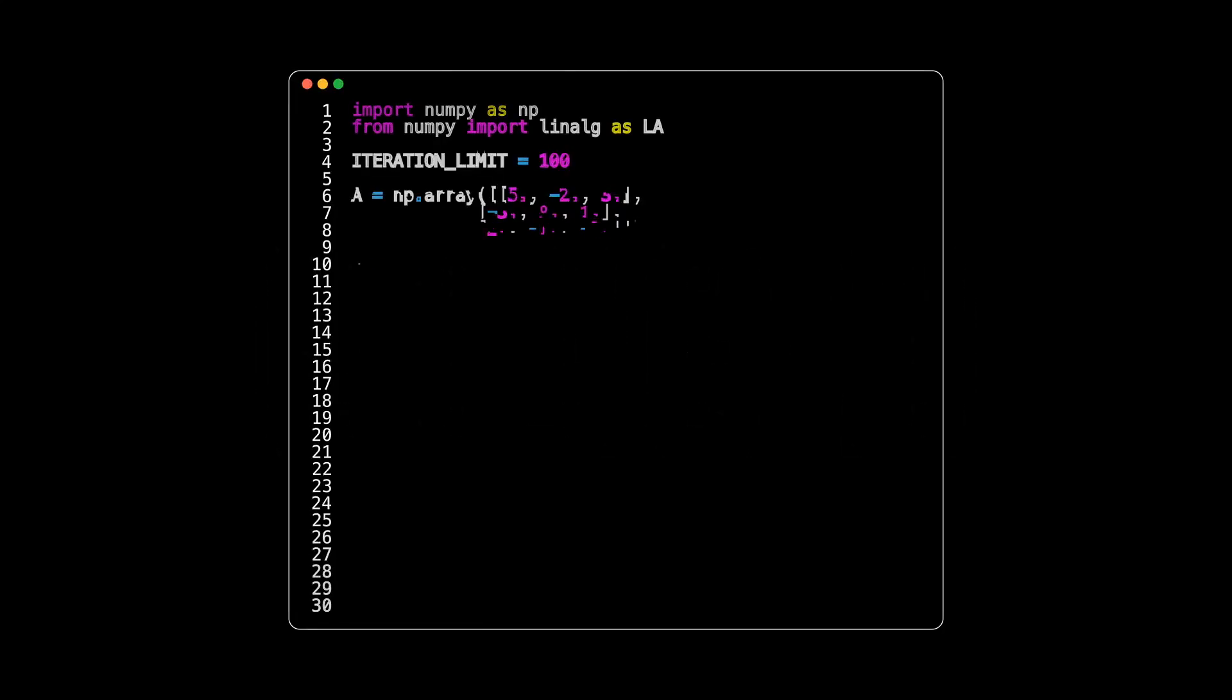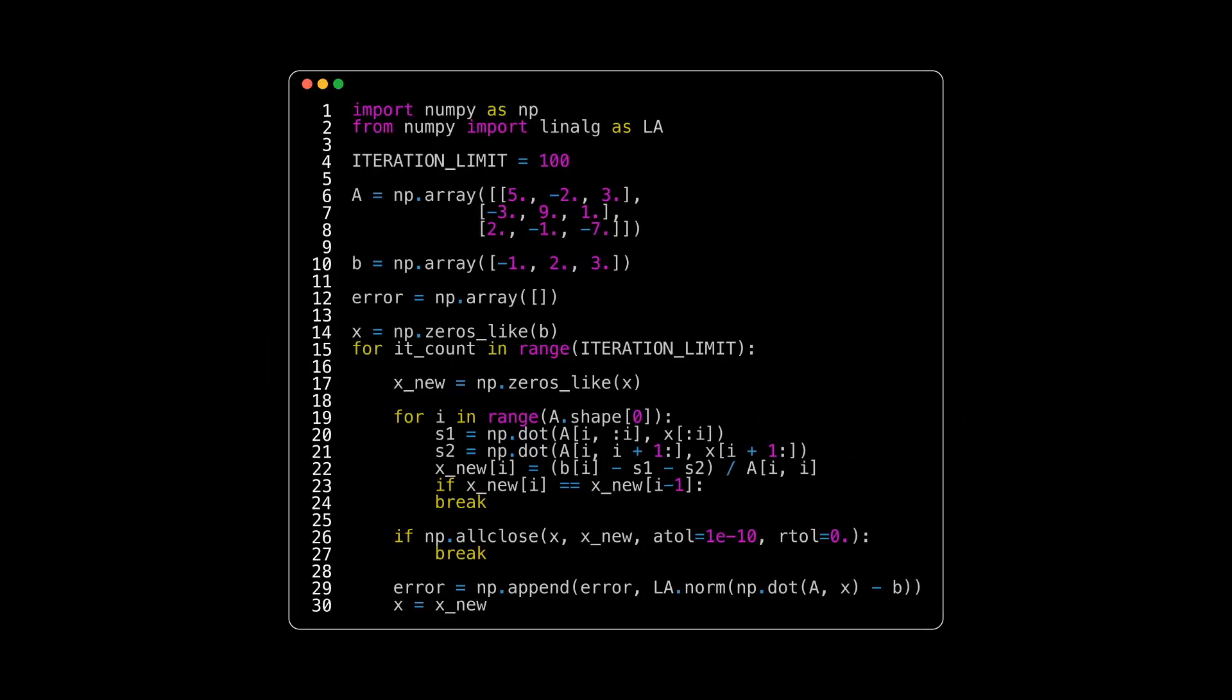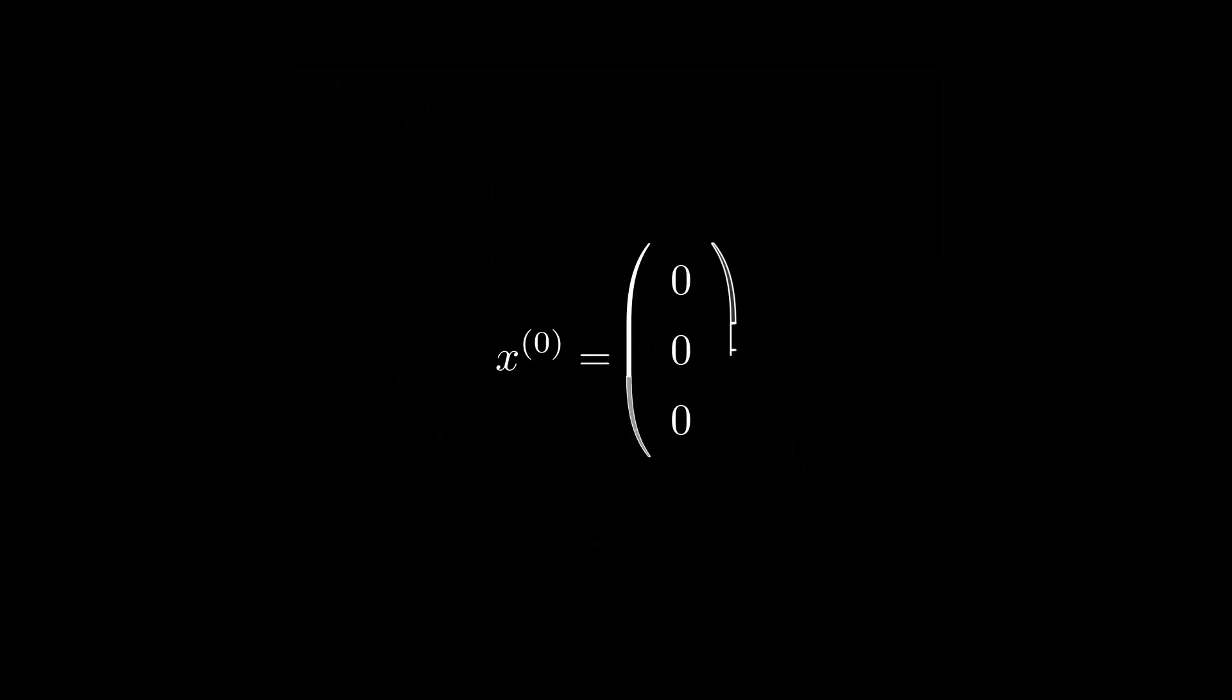So let's apply it. A problem we are trying to solve might look something like this. And putting our newly derived equation in Python code looks as follows. To start out, we simply have to make a guess for our starting x. So let's pick the zero vector for our example case here.